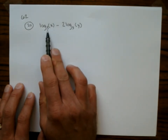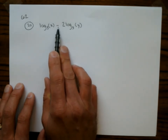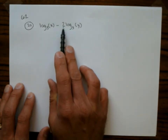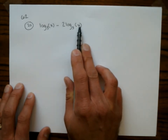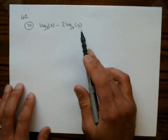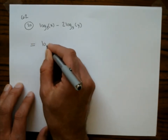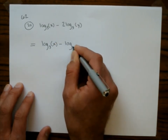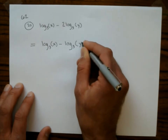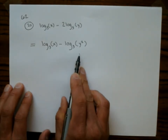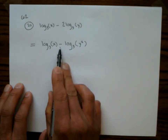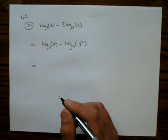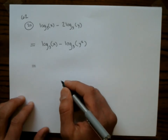It looks like we'll use the quotient rule, but you can only use the quotient rule when there are 1's in front of the logs — and there's a 2 there. So first I'll use the power rule to make that 2 jump up and become the exponent of the argument. This gives log base 3 of x minus log base 3 of y squared. Now I have a minus with 1's in front, so I apply the quotient rule and get log base 3 of (x over y squared).